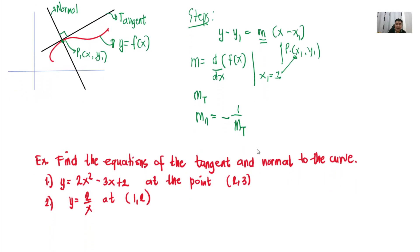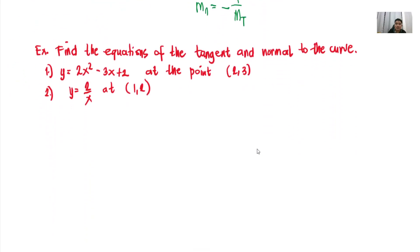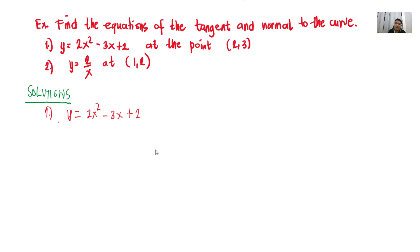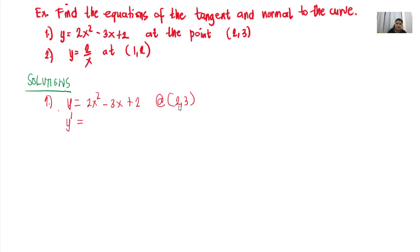Let's try this example to understand better. Find the equations of the tangent and normal to the curve. Number 1: y is equal to 2x squared minus 3x plus 2 at the point (2, 3). So for number 1, the solution — to get the slope, we first take the first derivative. So y prime is equal to... let me write the full problem: 2x squared minus 3x plus 2 at (2, 3).